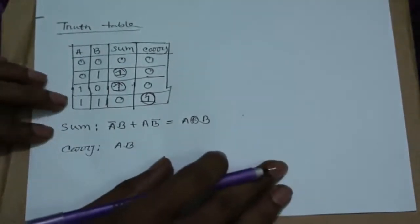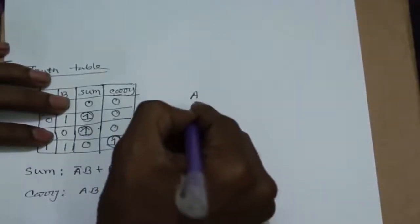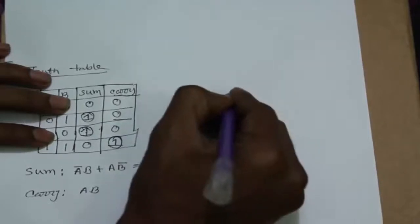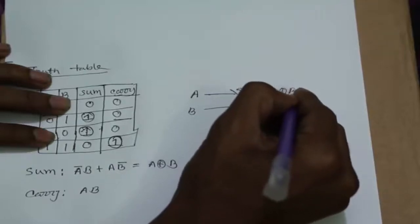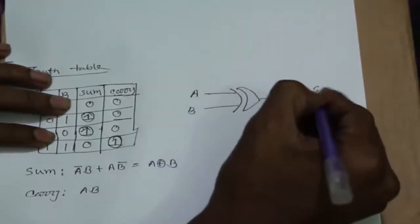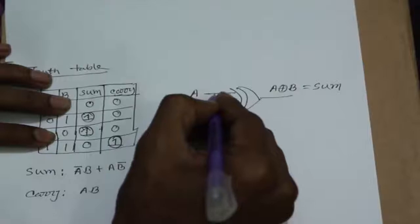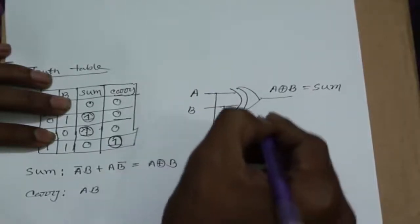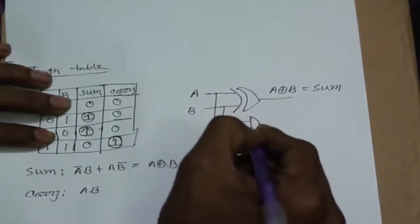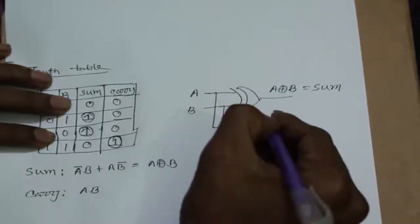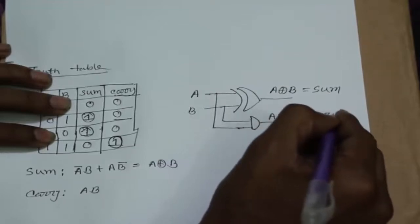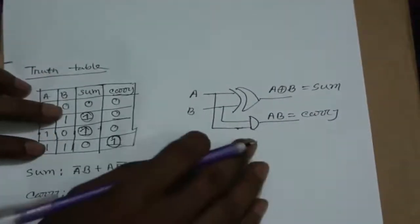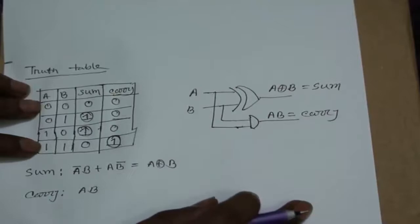Now, we draw the circuit of half adder. A and B go to XOR gate which gives SUM, and we use AND gate for A and B which gives CARRY. That's the circuit of half adder.